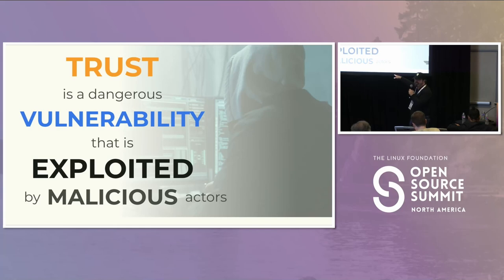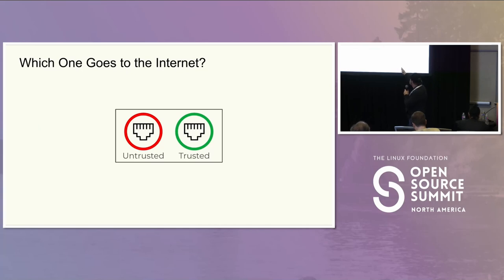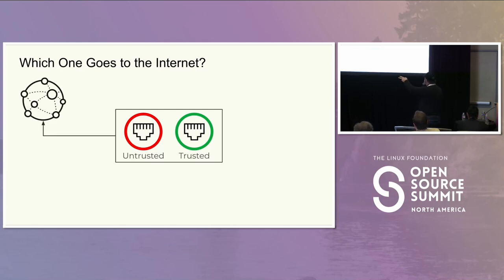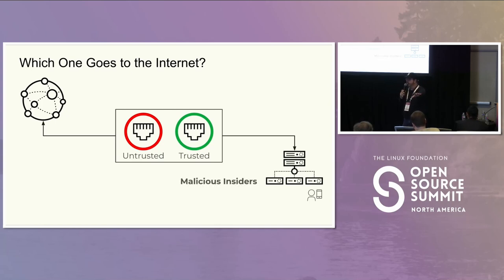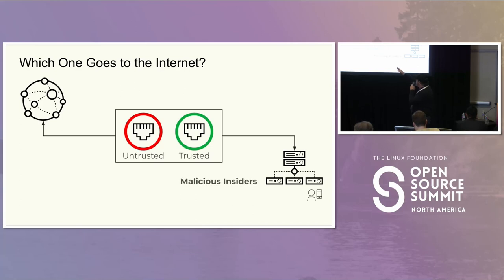This is dwell time — the malicious actor hanging out in your environment and you don't know it. Why do we have dwell time? Because we have a broken trust model. The untrusted side was the evil internet. The trusted side was your network where all the good people are. But what happens if malware crosses that ephemeral trust boundary?